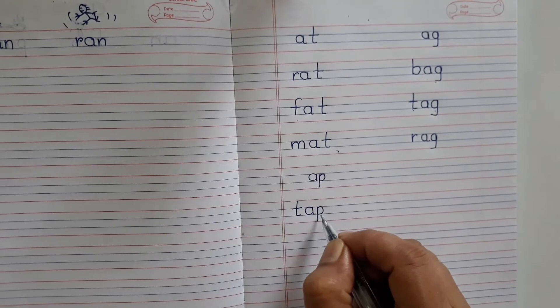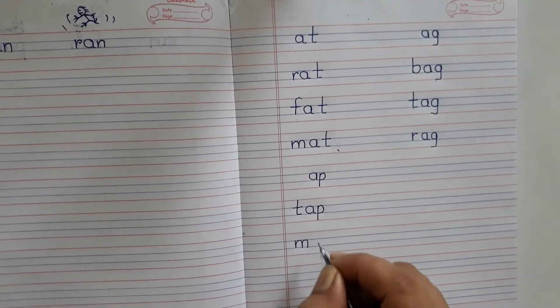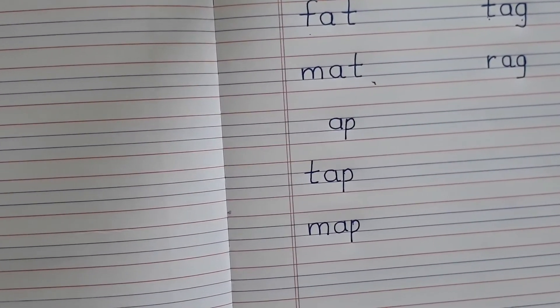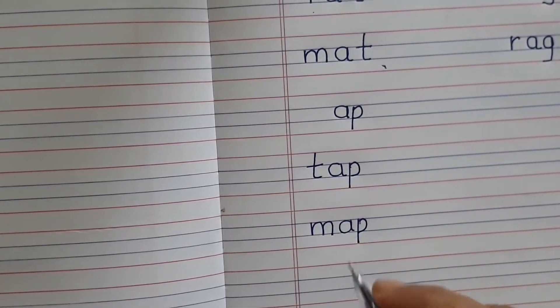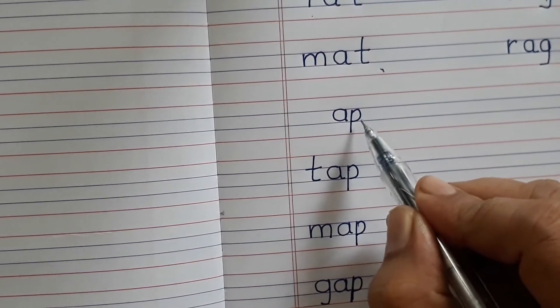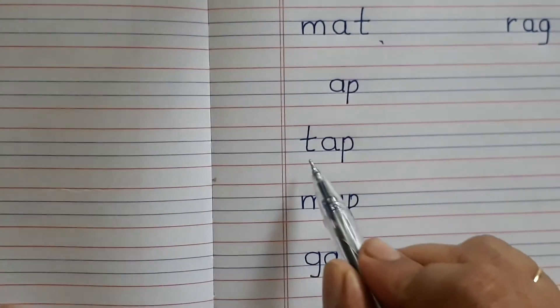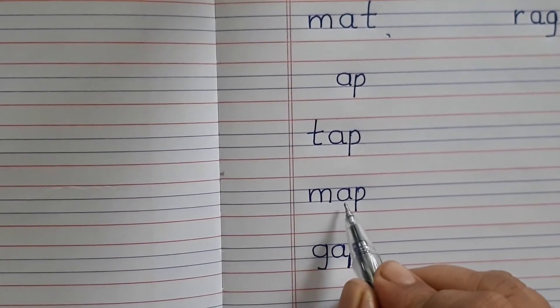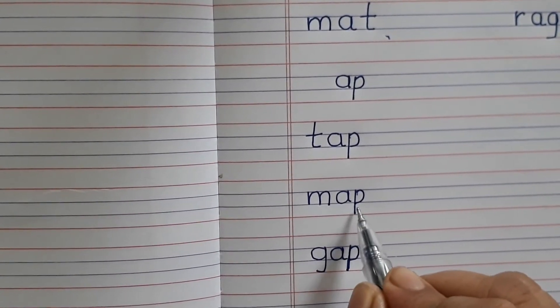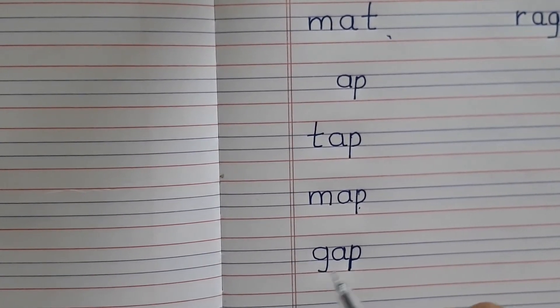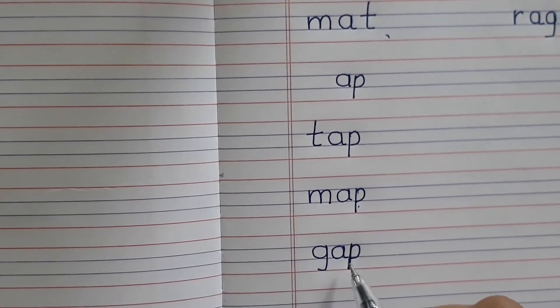TAP TAP. MAP MAP. GAP GAP. AP AP TAP TAP. T says TAP TAP. M says MAP MAP MAP. GAP GAP. GAP GAP.